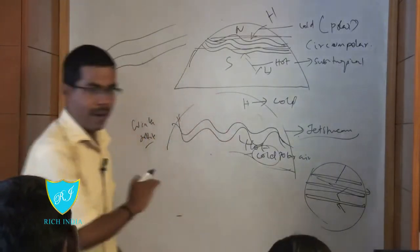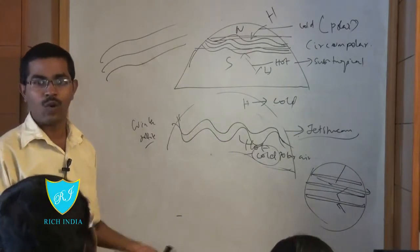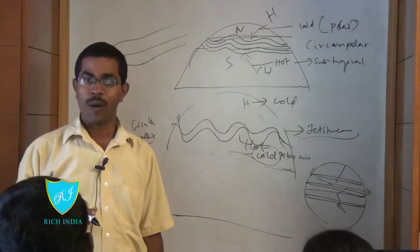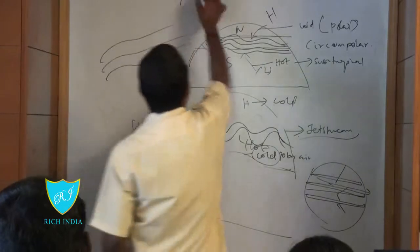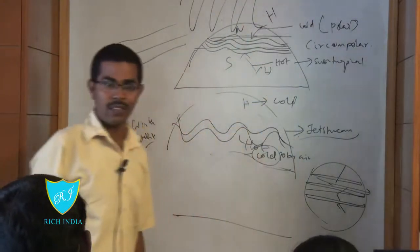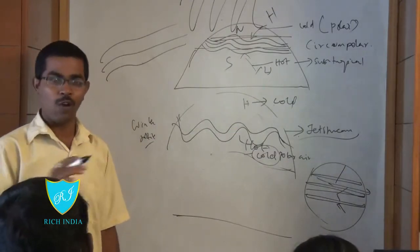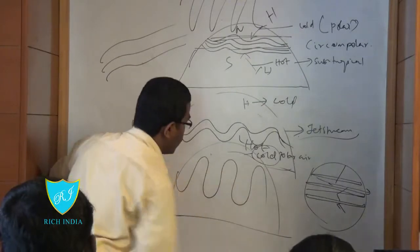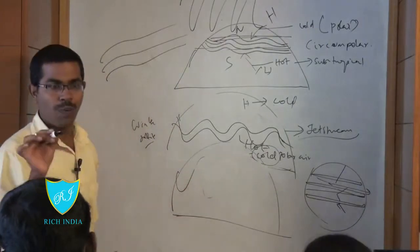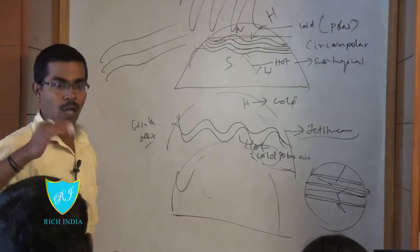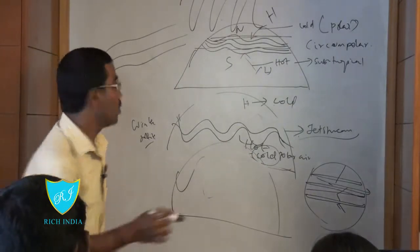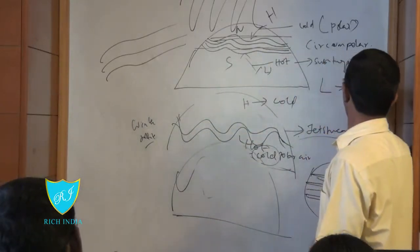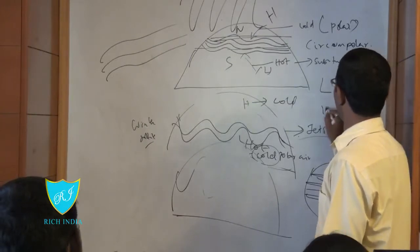In the last stage, the jet stream is broken up. When it breaks up, it forms cyclones and anticyclones. The direction of cyclones is anticlockwise, while high pressure systems are clockwise in the northern hemisphere. Low pressure is always anticlockwise, and high pressure is clockwise.